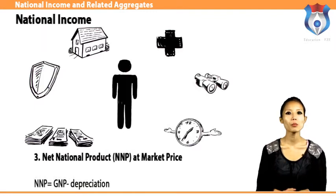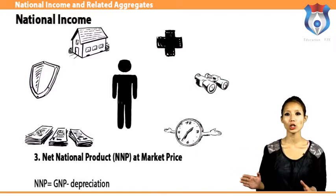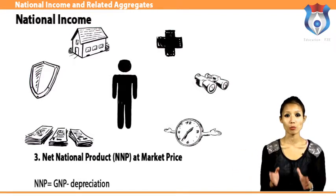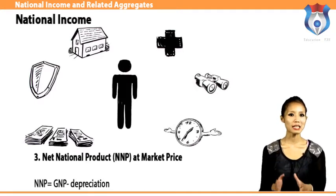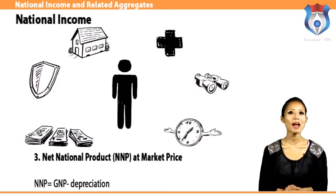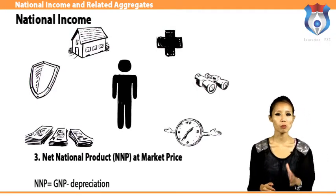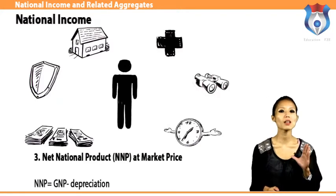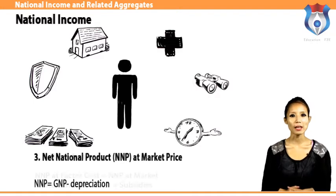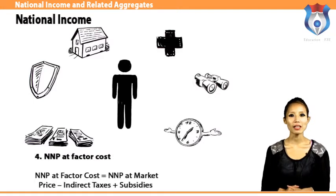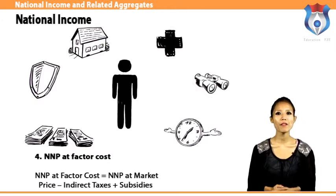Net National Product (NNP) at market price is the market value of all final goods and services after providing for depreciation. When charges for depreciation are deducted from GNP, we get NNP at market price. Therefore, NNP equals GNP minus depreciation. Depreciation is the consumption of fixed capital, or the falling value of fixed capital due to wear and tear.